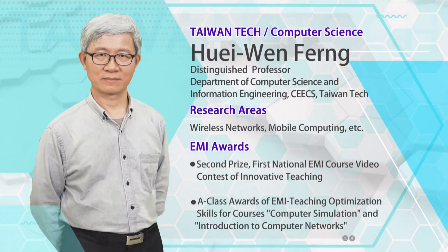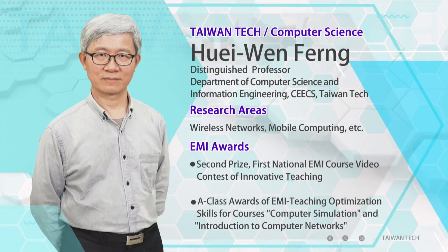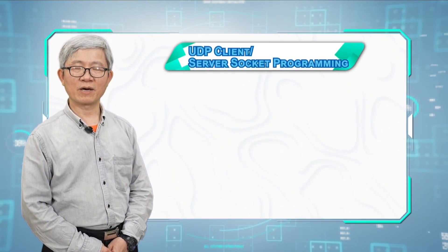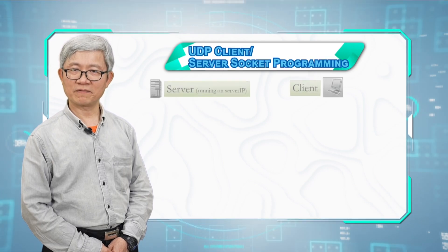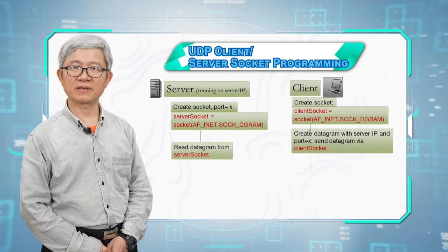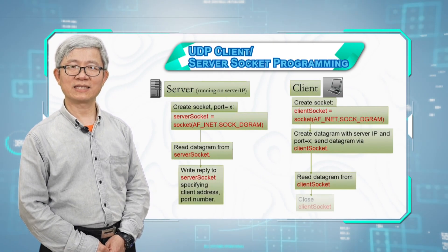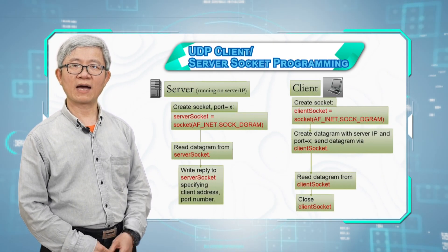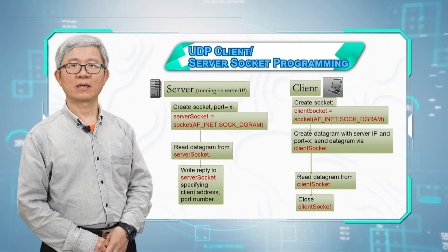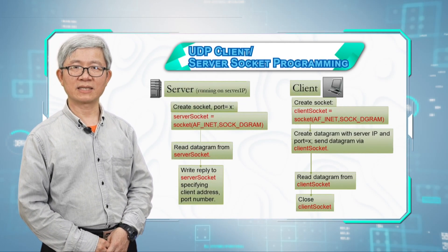Hello everyone. Welcome to Networking Essentials, Unit 3. In this unit, we will introduce the concept of sockets and socket programming first. After that, we will cover two types of socket programming using UDP and TCP. Finally, we will look at the frameworks of socket programming. This is the content contained in this unit.